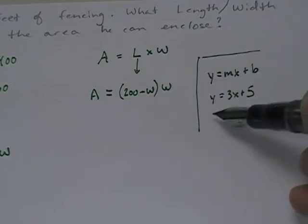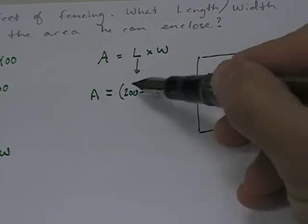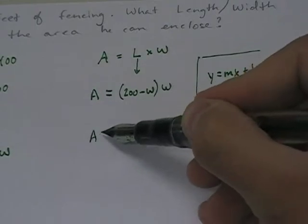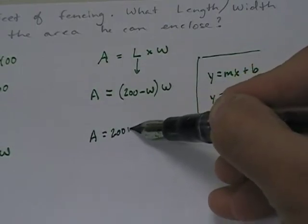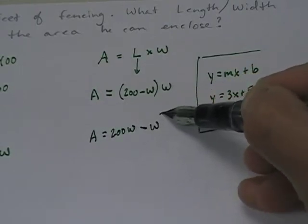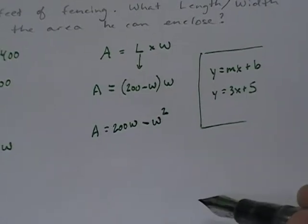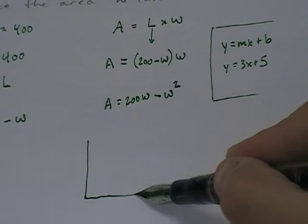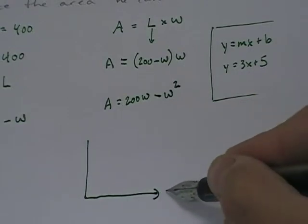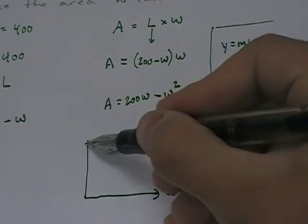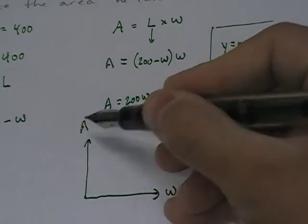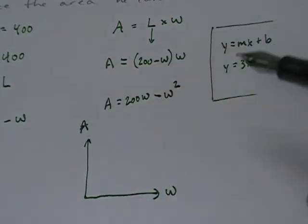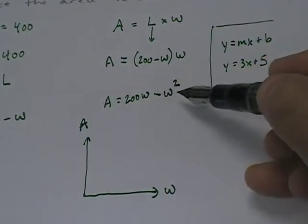Let's take a look. Let's go ahead and distribute this W. So I get A equals 200W minus W squared. Now what is this? What does this graph look like? Well, if we treat this like it's x's and y's, then the x axis would be W, and the y axis would be A. And this is a parabola.